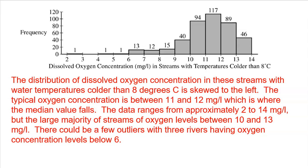All right, here's my write-up of that. Now, make sure when you write this, you talk in context. Use units and start off with a good intro. The distribution of dissolved oxygen concentration in these streams with water temperatures colder than 8 degrees Celsius is skewed to the left. So many kids will just start off with it is skewed to the left, right? That's not how you would start a formal English paper or a term paper. You'd start off by addressing the topic of what's going on in the problem, which is dissolved oxygen concentration in streams with temperatures colder than 8 degrees Celsius.